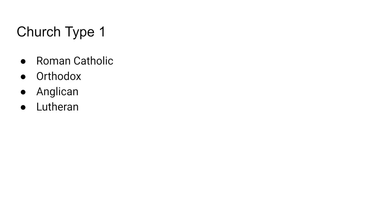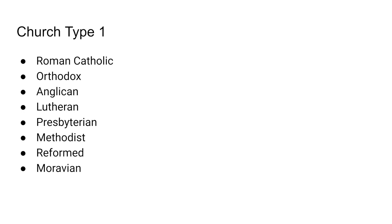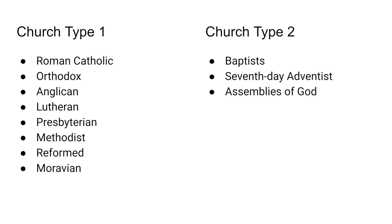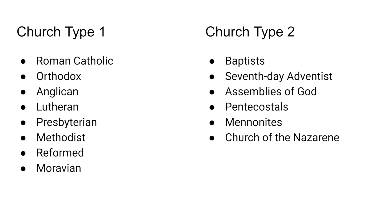For church type 1 I'm going to be putting in Roman Catholic, Orthodox, Anglican, Lutheran, Presbyterian, Methodist, Reformed, and Moravian. And then in church type 2: the Baptists, the Seventh Day Adventists, the Assemblies of God, the Pentecostals, the Mennonites, the Church of the Nazarene, the Evangelicals, and all the other non-denominational — these are your mega churches that we see a lot of in America.